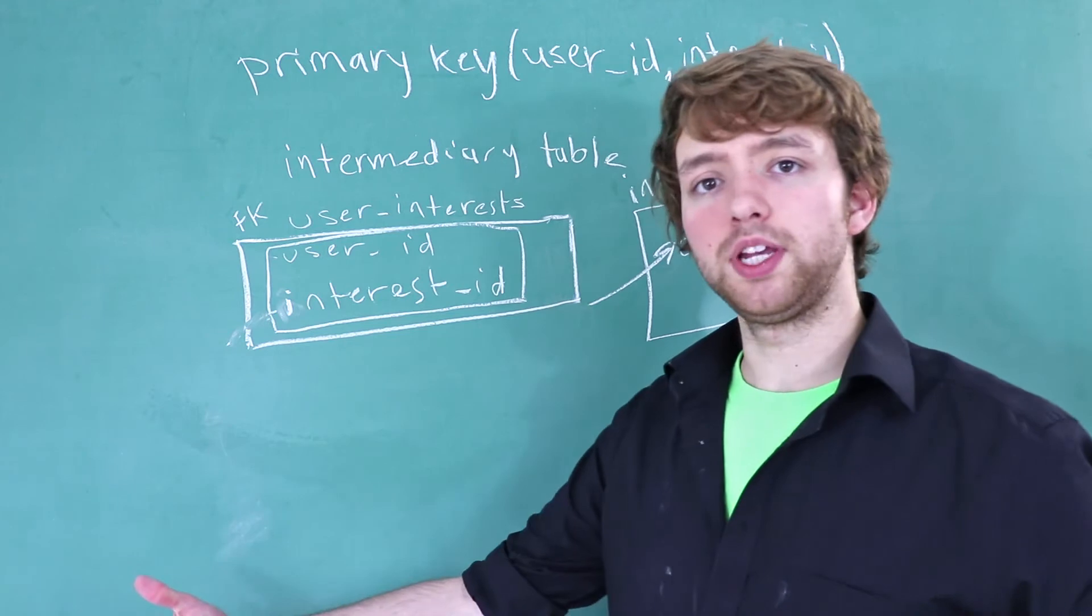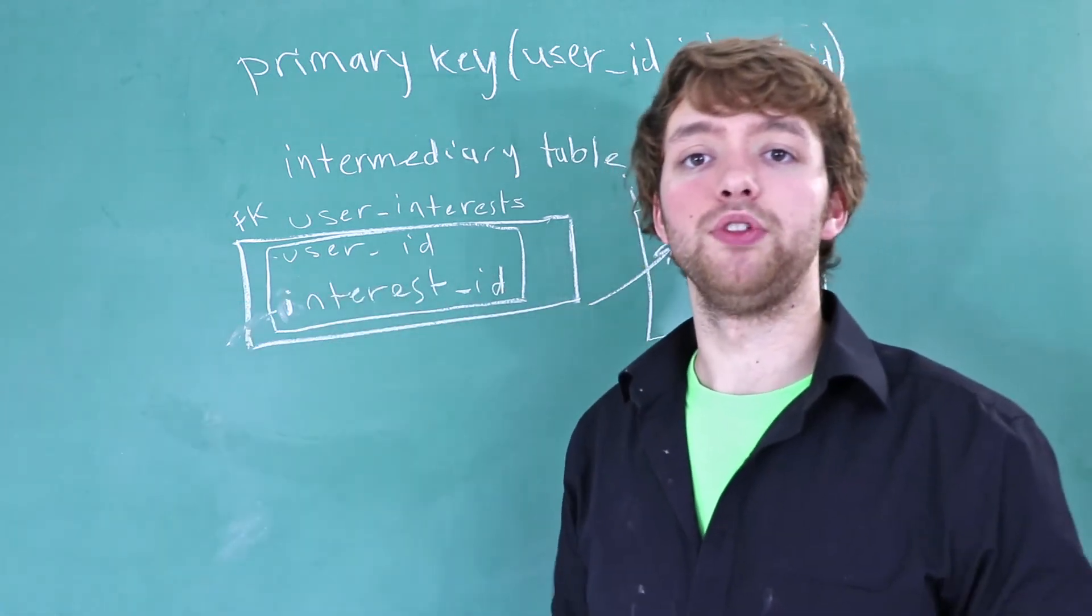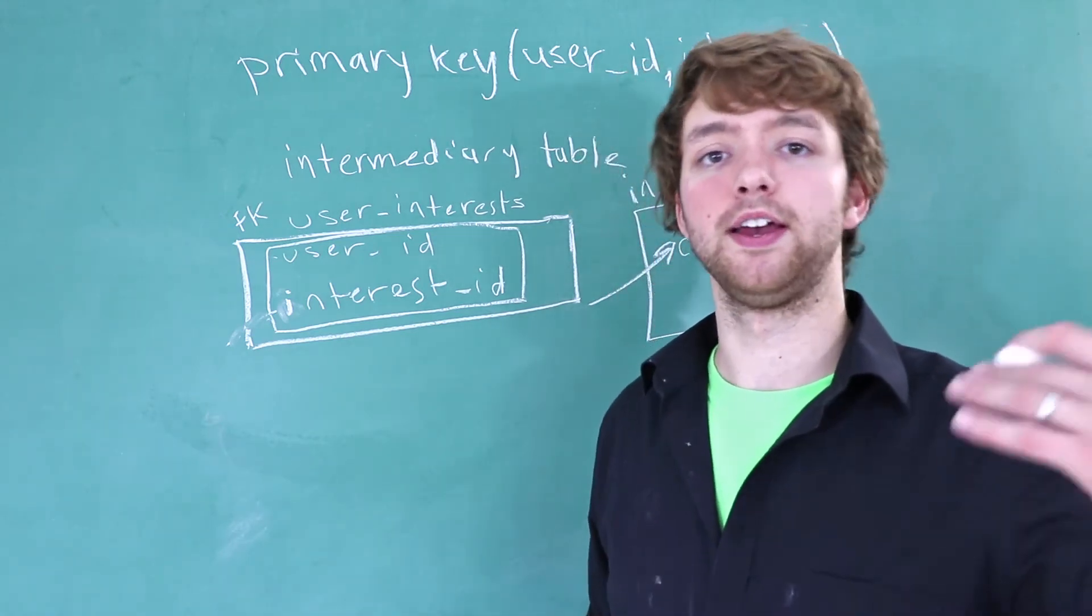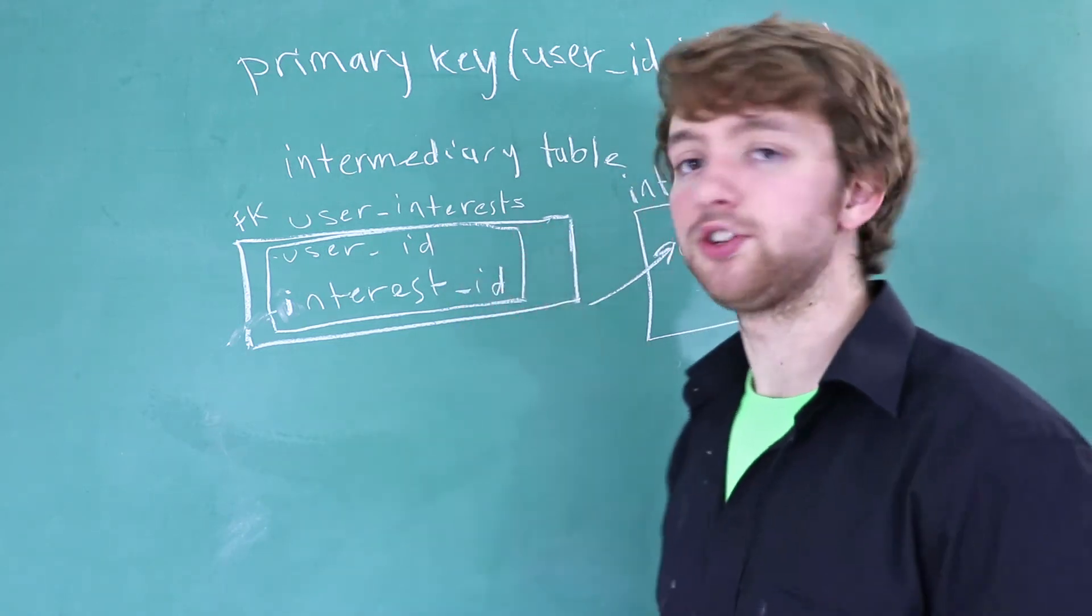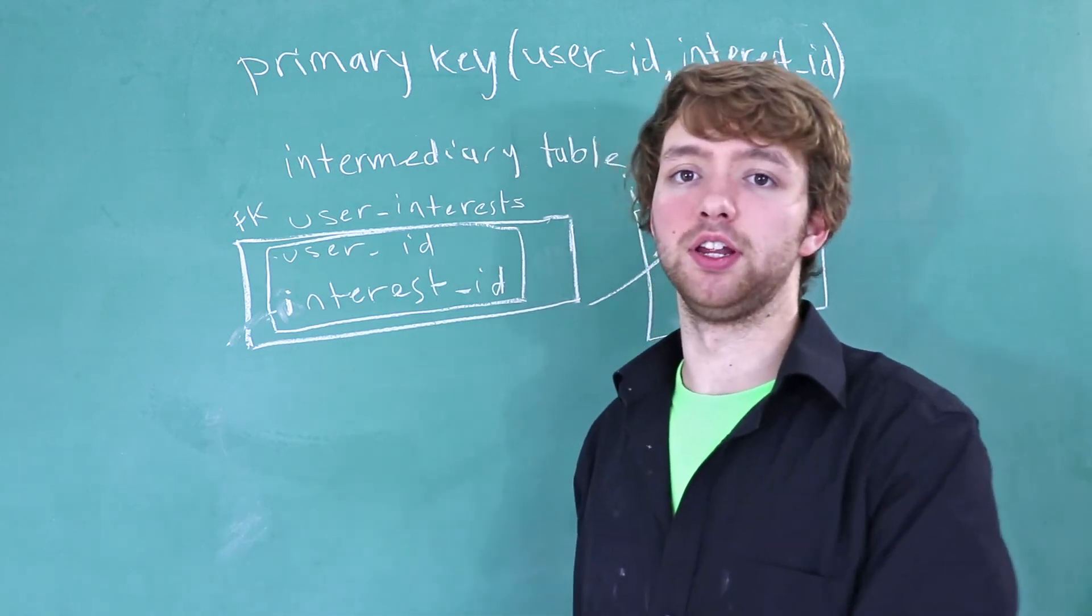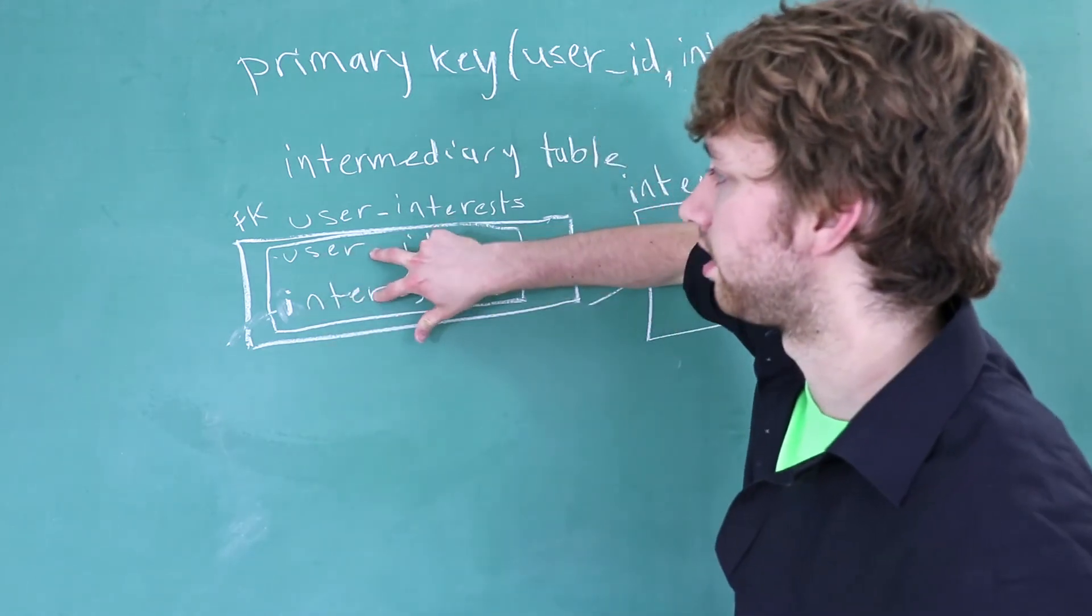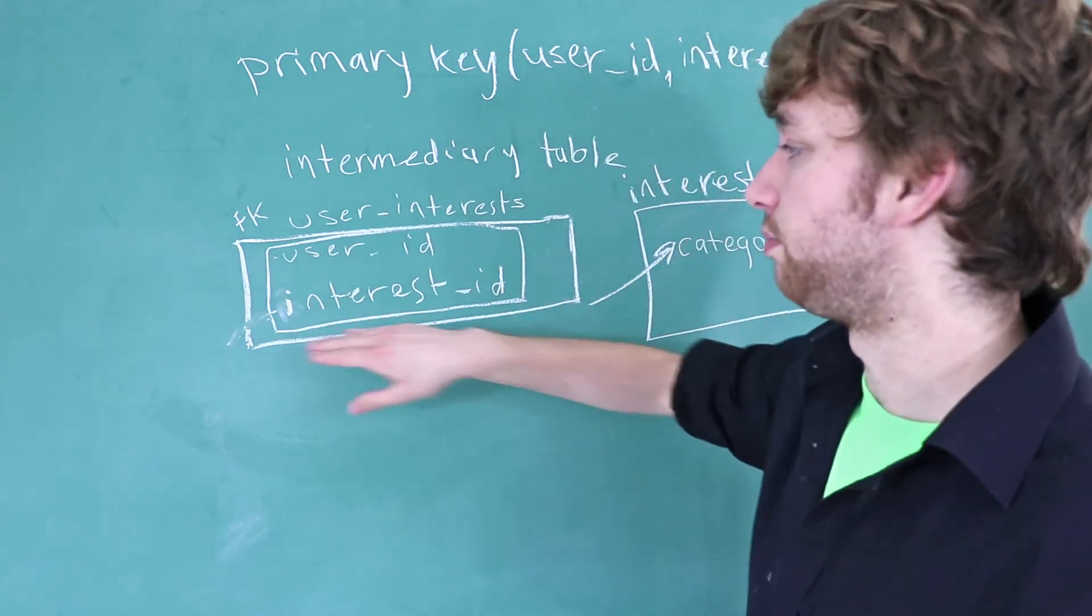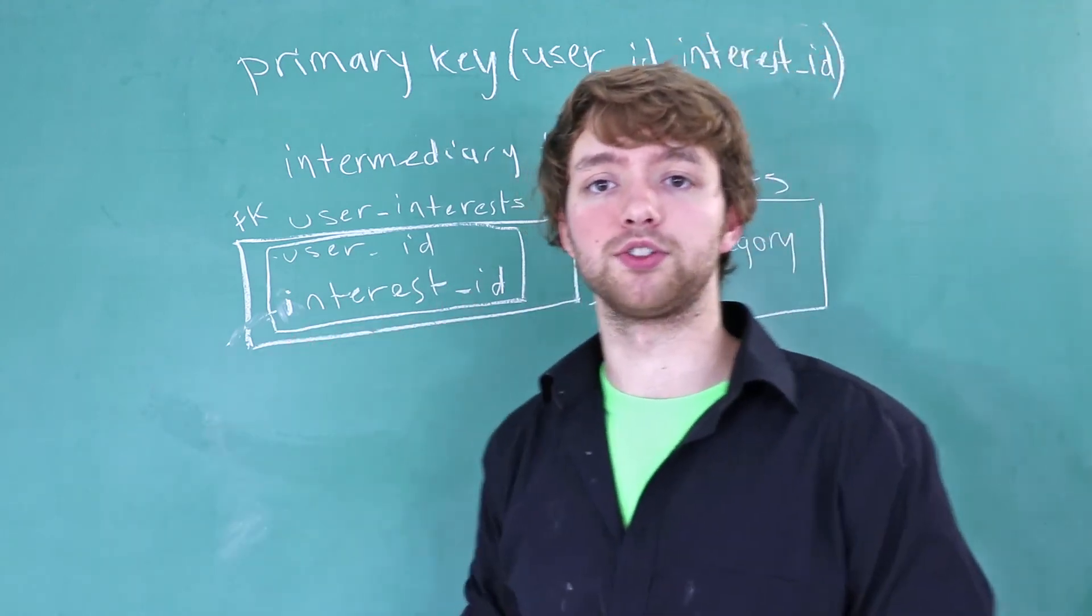So for example, you join the website, two weeks later, you say, hey, I'm interested in computer science. Well, then it puts a timestamp saying, oh, this guy became interested in computer science at this time. Well, that's actually relevant to both the user and the interest because it's recording when a user became interested in something. So anytime you have something that relates to both of these and wouldn't really make sense in the user table and wouldn't really make sense in the interest table, you can put it in here as a column inside of the intermediary table between the many to many relationship.